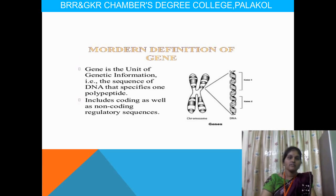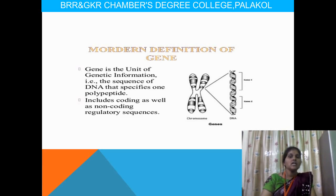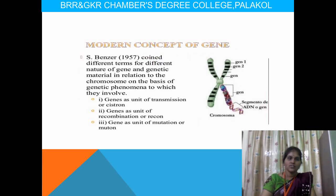The modern definition of a gene: a gene is the unit of genetic information that transfers characters from one generation to another. The sequence of DNA specifies one polypeptide, including coding and non-coding regions. It regulates some sequences and gives characteristics from one generation to another generation.